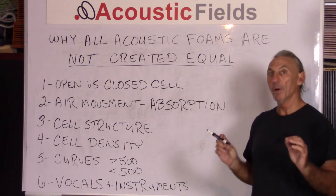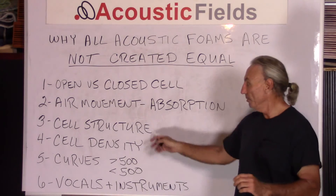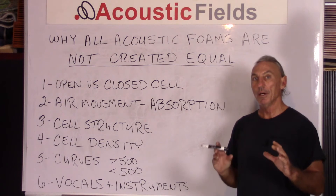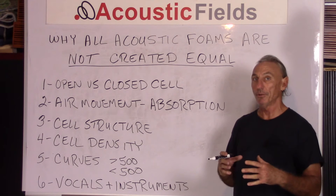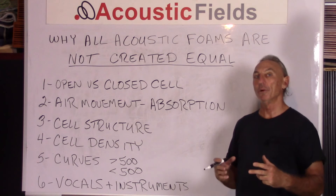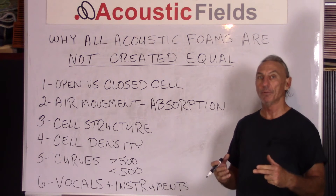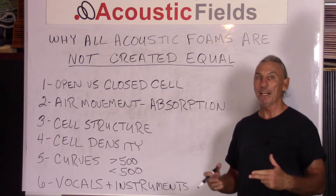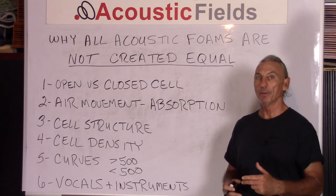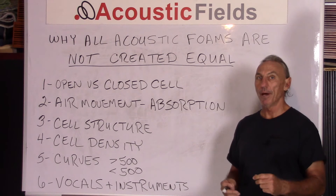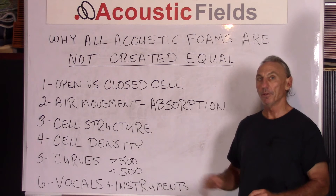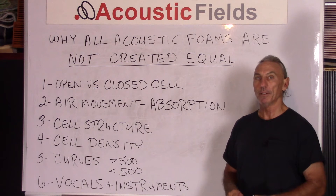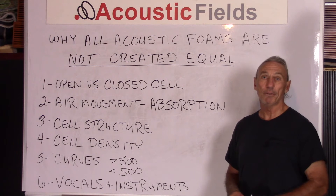What's important with open cell foam? Two areas: the cell structure and the cell density — how many cells per square inch do we have, and what is their structure? The more uniform the structure, the smoother the absorption curve. The more uniform the density, the smoother the absorption curve. This is why we pursued this particular area, because we were never happy with the absorption curves of foams in the marketplace back when we did our research and development, and even today that still holds true, although they are getting a little better.